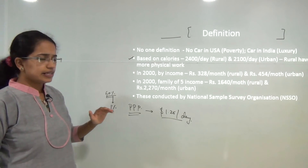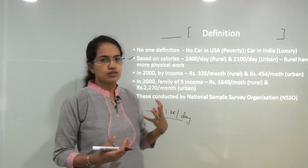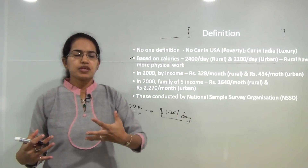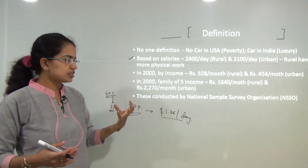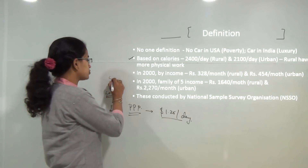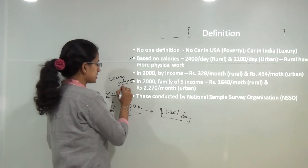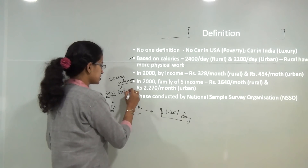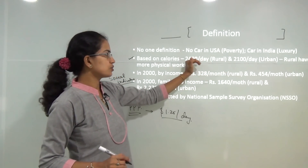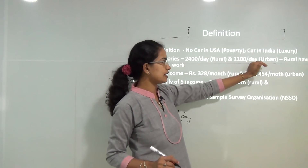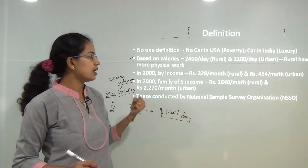In India, various definitions have come up over time. It started with the consumption of calories, then switched to income, and more recently the focus is on social indicators — availability of schooling facilities, health indicators — and the concept of social exclusion. Based on calories, 2400 calories per day for rural areas and 2100 for urban areas is considered optimum, since rural people require more physical work.